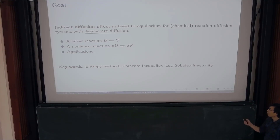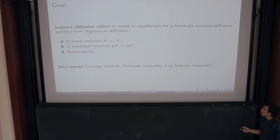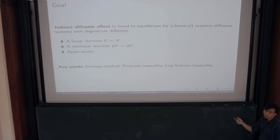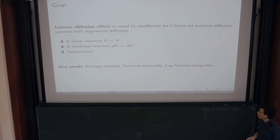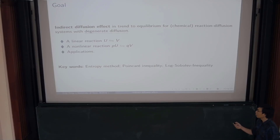In this talk, I'm mostly talking about the application in reaction-diffusion systems coming out of chemistry with degenerate diffusion. I'm going to explain also what degenerate diffusion means, because they might have some different meaning. I'll start with some linear reaction, just to see how the idea works, and then we come up with some more technical things with the nonlinear reaction and some further applications.